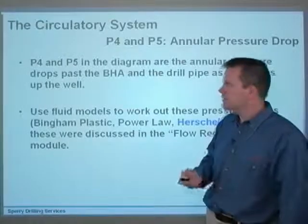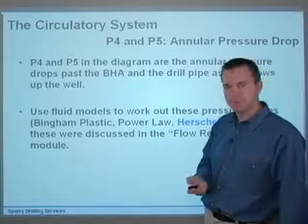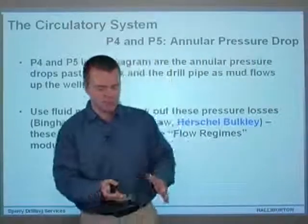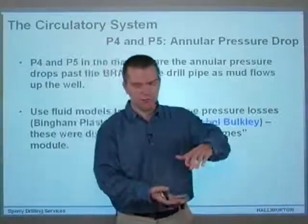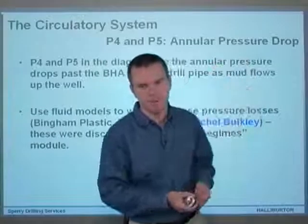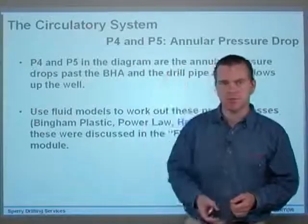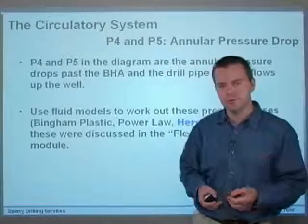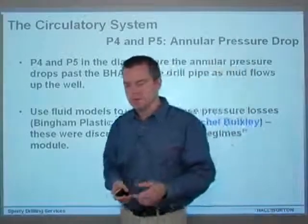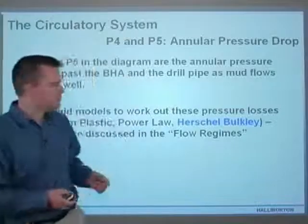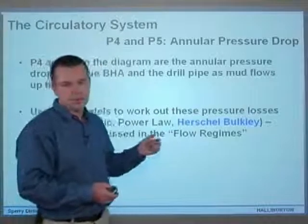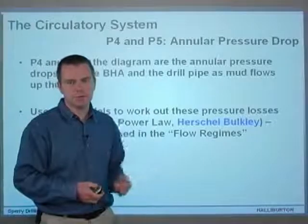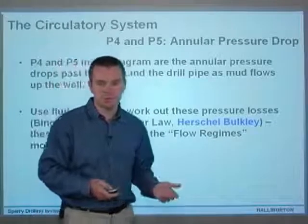Looking at the annulus next — P4 and P5 on that diagram — those are the annular pressure drops past the BHA and past the drill pipe as the mud flows up the entire wellbore. Again, you use the fluid models to work out these pressure losses, with Herschel-Bulkley being preferable to the other two. How you determine these pressures is also discussed in the flow regimes module.